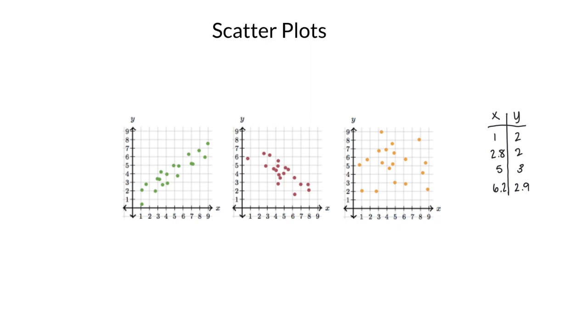So we plot each of these pairs on a graph. Again, if x is 1, y is 2, we have this point right here. Or maybe x is 2.8, just a little before 3, and the output is 2. 5, 3 looked to be about on the graph.